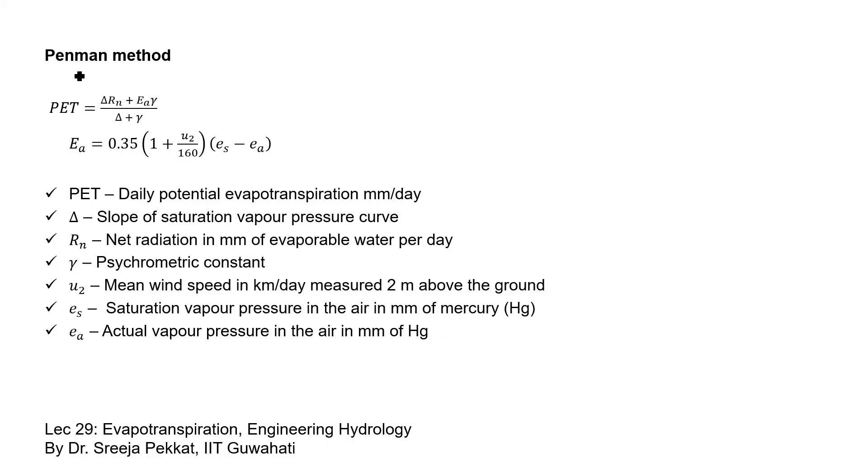Pinman method is one of those methods which is used to find the potential evapotranspiration, which is given by (delta rn plus ea times gamma) divided by (delta plus gamma), where ea equals 0.35 times (1 plus u2 by 160) times (es minus ea). This equation is widely used to define the potential evapotranspiration.